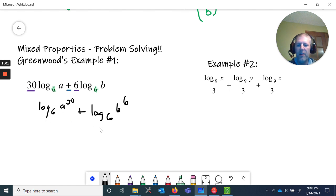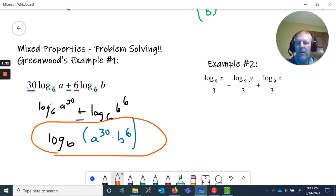Log base six of b to the sixth power. Now we've got everything here. We've got a log base six of some stuff and a log base six of some stuff. Notice it's added together, so addition is going to condense to multiplication. Now I can condense this even more to log base six of, and I'll put some parentheses in here, a to the 30th power times b to the sixth power.